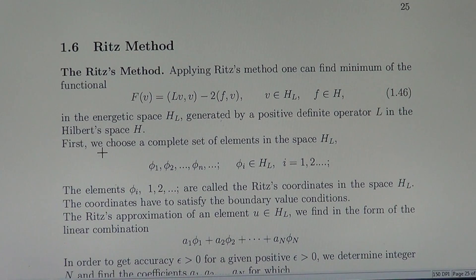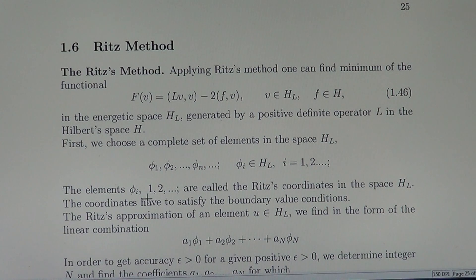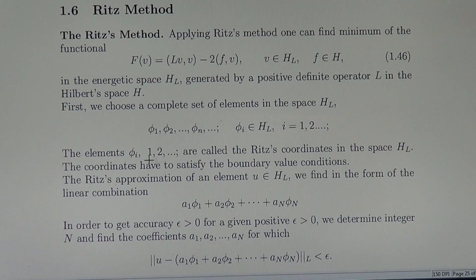In the procedure, first we choose a complete set of elements in the space H_L: Phi_1, Phi_2, ... Phi_n — an infinite set of elements in H_L. The elements Phi_i, for i equals 1, 2, 3, and so on, are called Ritz coordinates in the space H_L. The coordinates have to satisfy boundary value conditions.